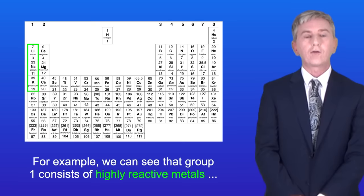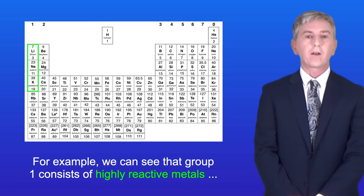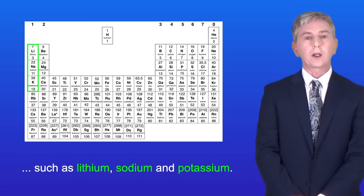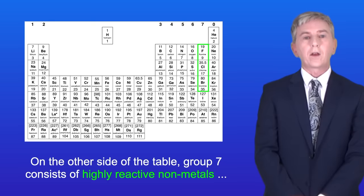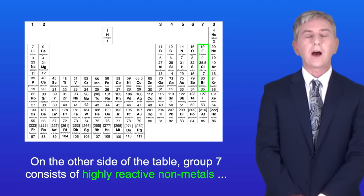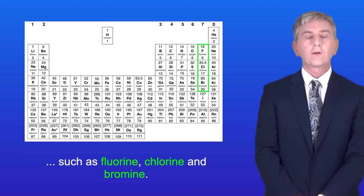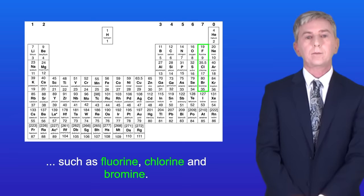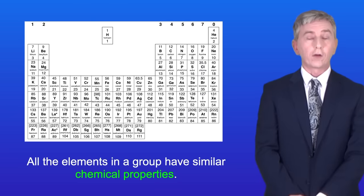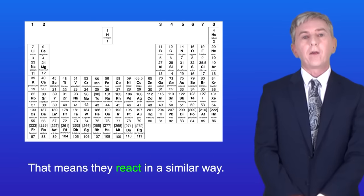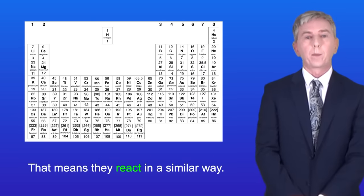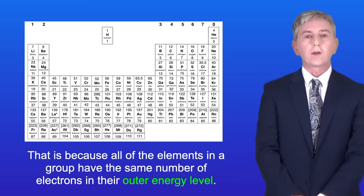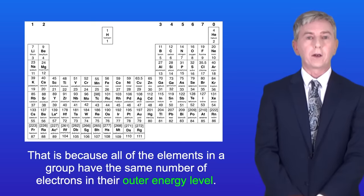So for example, we can see that group 1 consists of highly reactive metals such as lithium, sodium, and potassium. On the other side of the table, group 7 consists of highly reactive non-metals such as fluorine, chlorine, and bromine. All of the elements in a group have similar chemical properties, and that means that they react in a similar way. That's because all of the elements in a group have the same number of electrons in the outer energy level.